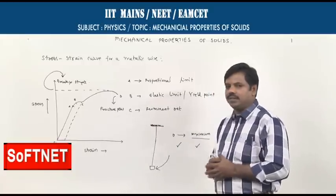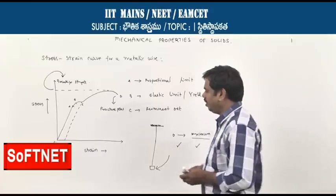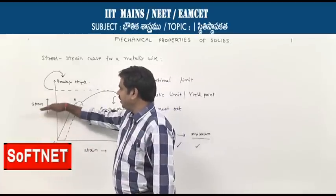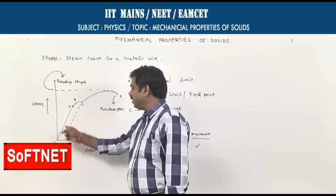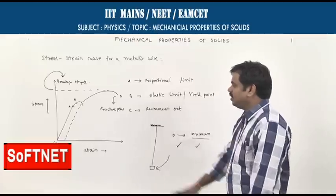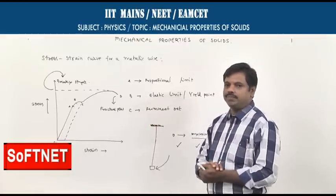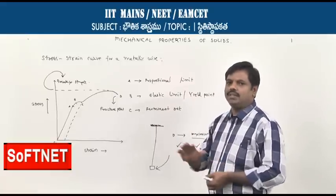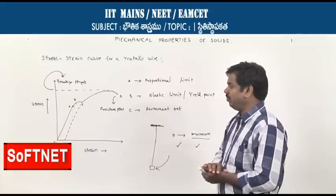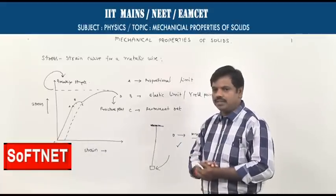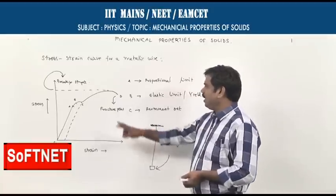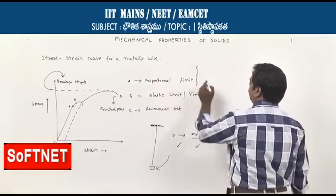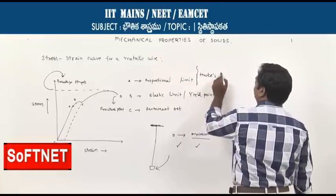From the graph, if you observe carefully from point O to A, when the stress is increased, the strain also increases linearly — meaning stress is directly proportional to strain. This is Hooke's law within the proportionality limit. Point A corresponds to the proportionality limit, meaning up to point A the wire obeys Hooke's law.